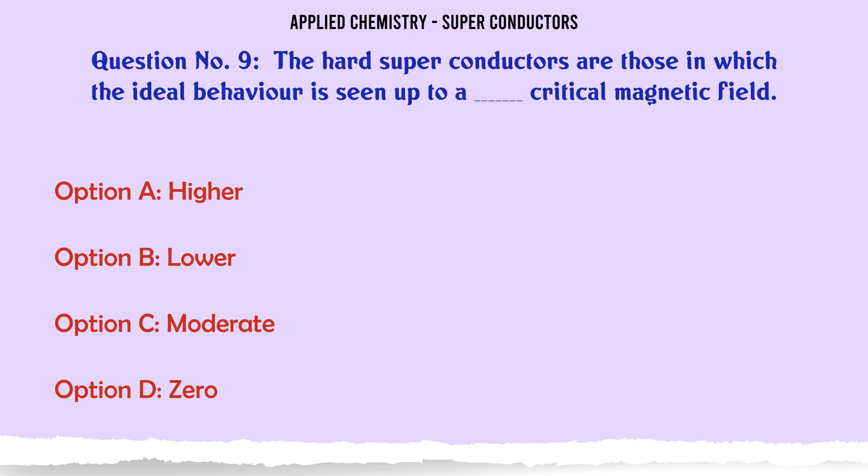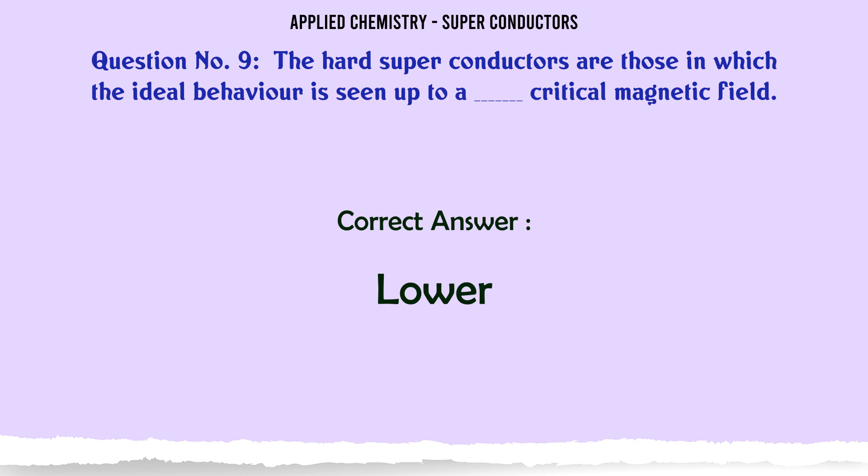The hard superconductors are those in which the ideal behavior is seen up to a critical magnetic field: A higher, B lower, C moderate, D zero. The correct answer is lower.